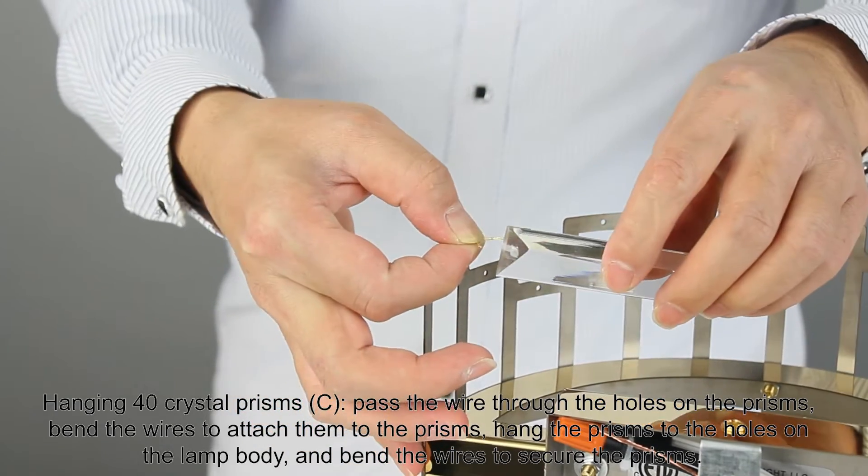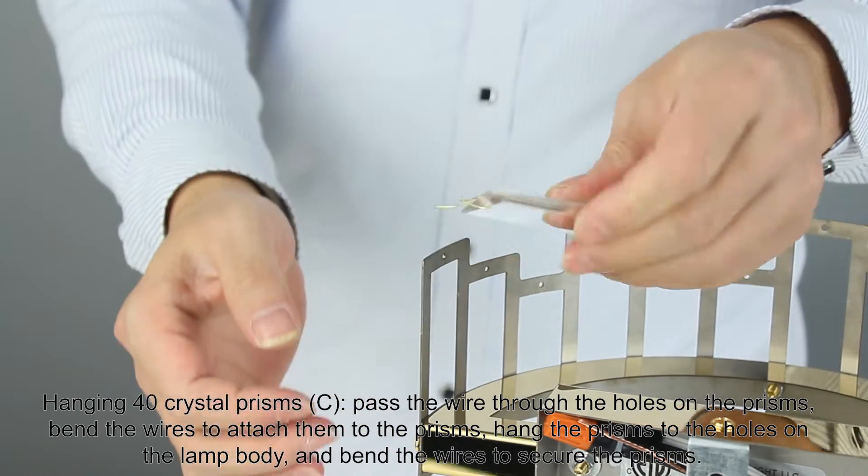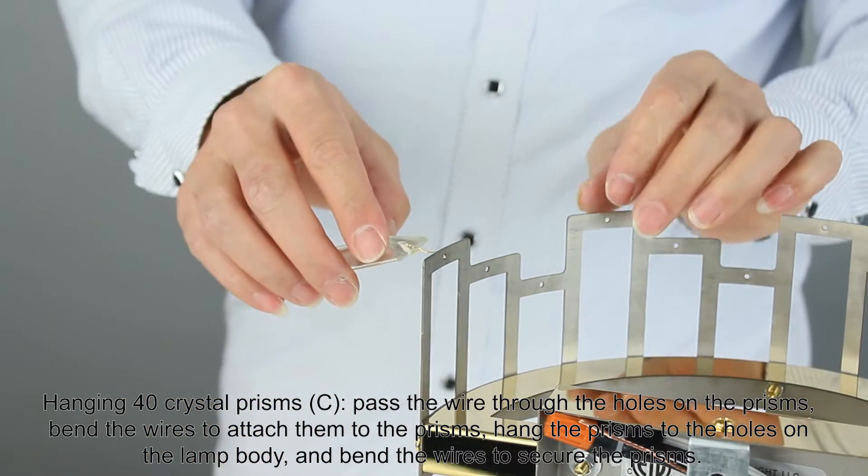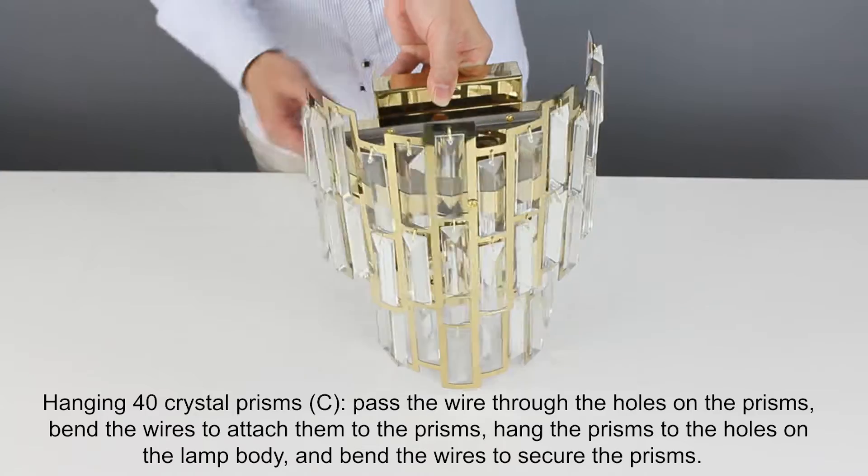Hanging 40 crystal prisms. Pass the wire through the holes on the prisms, bend the wires to attach them to the prisms, hang the prisms to the holes on the lamp body, and bend the wires to secure the prisms.